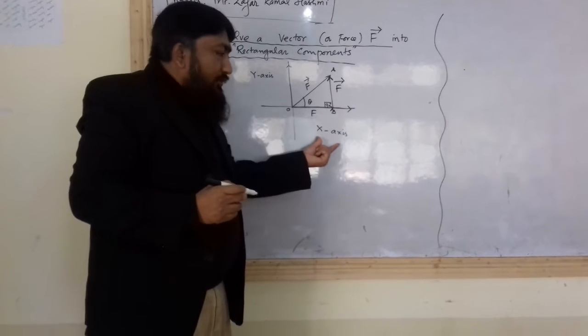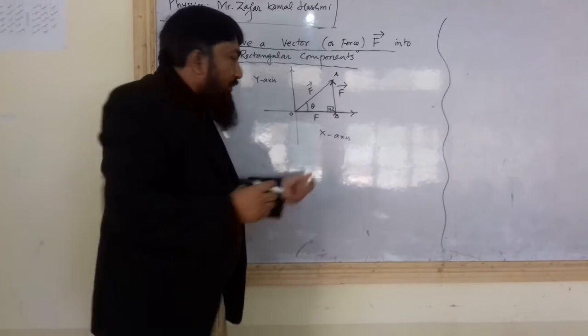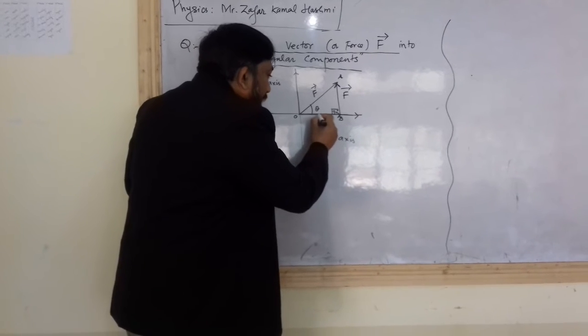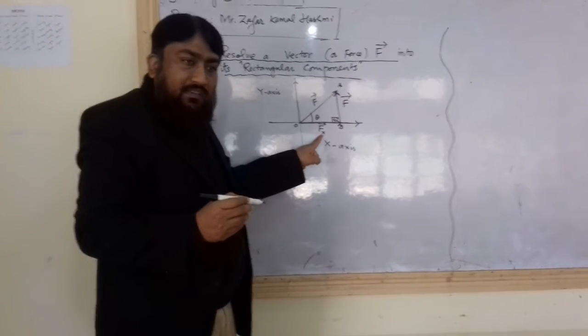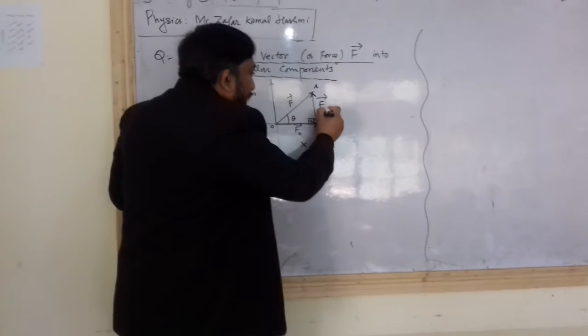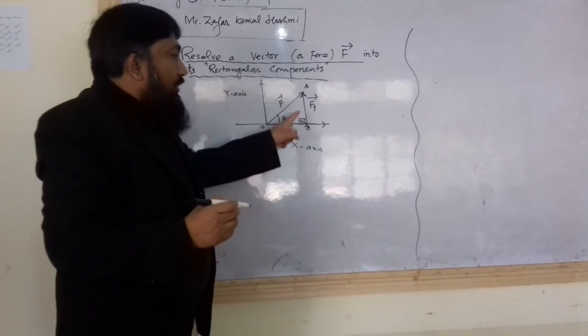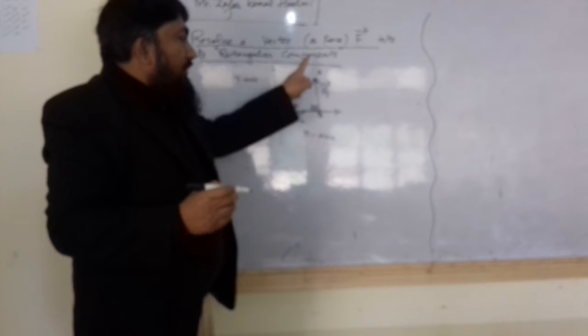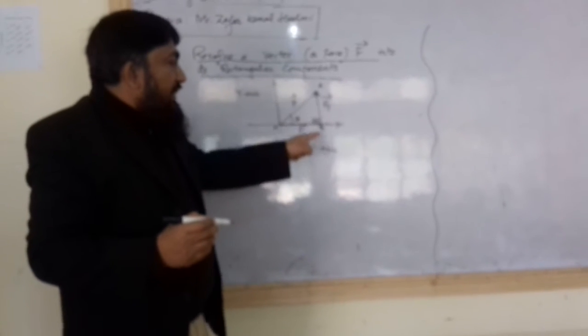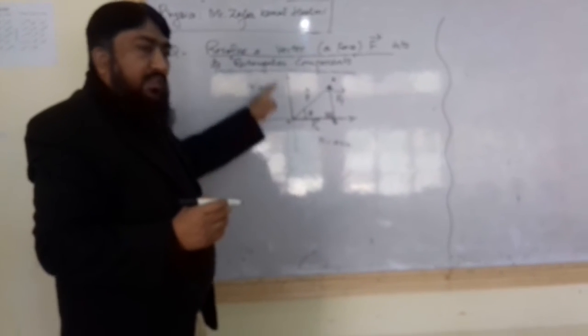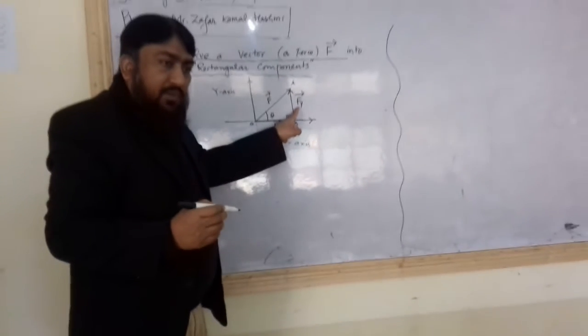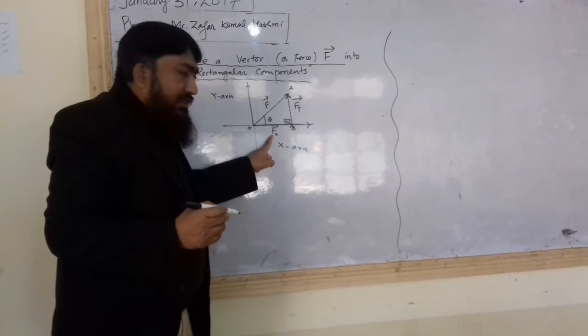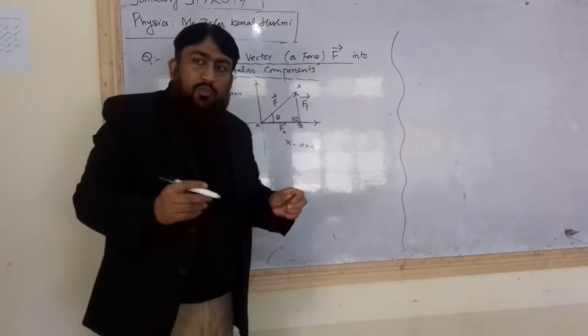This is also a part of F and this is also a part of F. This is a son who lives on X axis, so I can write Fx. Component of vector F along X axis. And I can write here Fy, component of vector F along Y axis, because BA is parallel to Y axis. So this is component of vector F along Y axis and this is component of vector F along X axis.